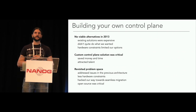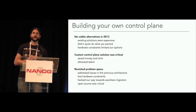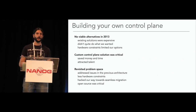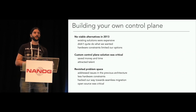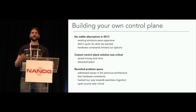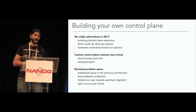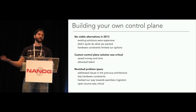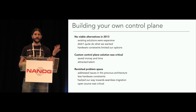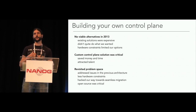To summarize everything: we built what we built in 2013 because there was nothing better — routers were super expensive and switches had limitations, so we had to do horrible Layer 2 hacks. Having a custom control plane was critical because we saved a lot of money and time, and it allowed us to attract talent. We revisited the solution when the team was larger and there were fewer hardware constraints so we could build something better. We hacked our way into a seamless migration, which makes a lot of difference. And open source was critical — without it, we couldn't have pulled this off.